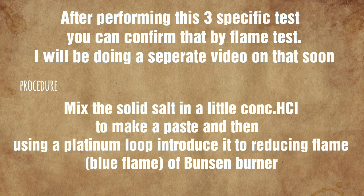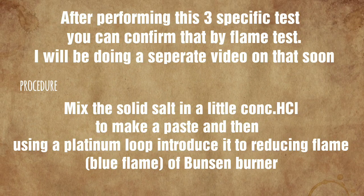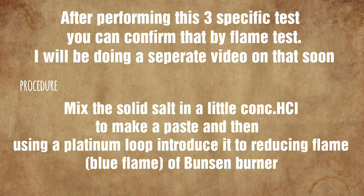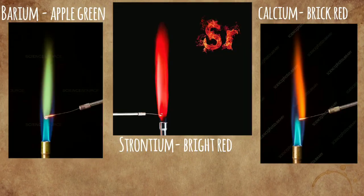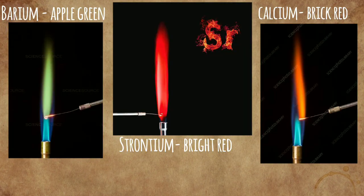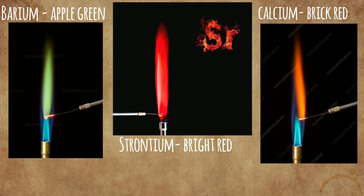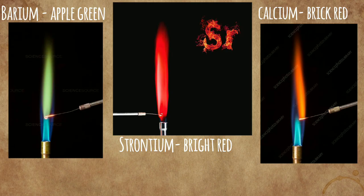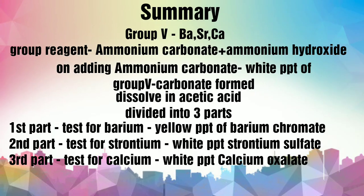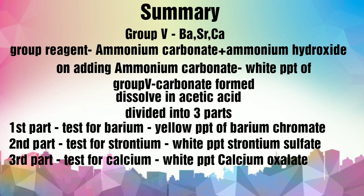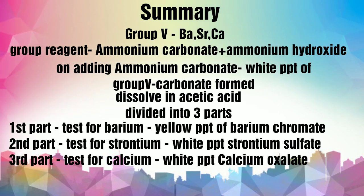The second confirmatory test for Group 5 cations is the flame test. We make a paste with concentrated HCl and hold it in a Bunsen burner flame. Barium gives an apple-green color, strontium gives a bright red color, and calcium gives a brick-red color to the reducing flame.